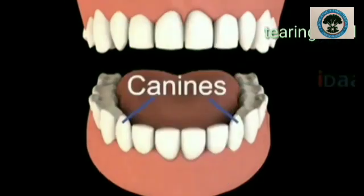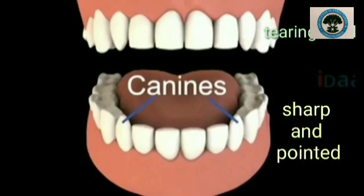Canines. Canines are used for tearing food. One canine is present on both sides of the incisor in both the jaws. There are a total of four canines — we have two canines in each jaw. They are sharp and pointed.